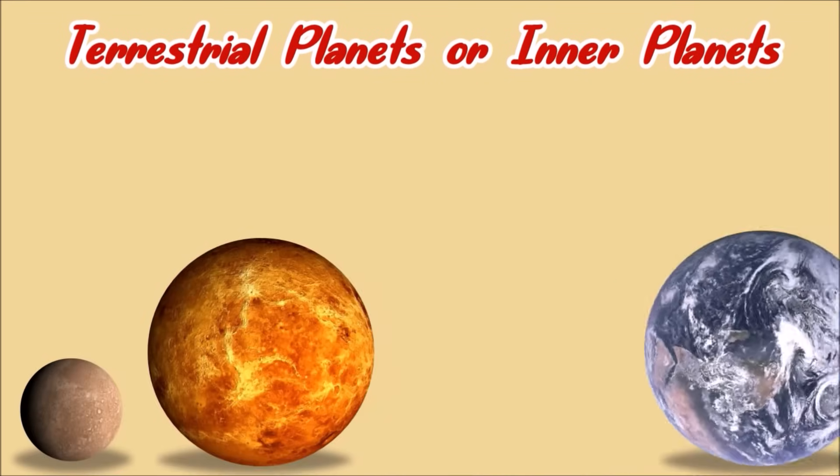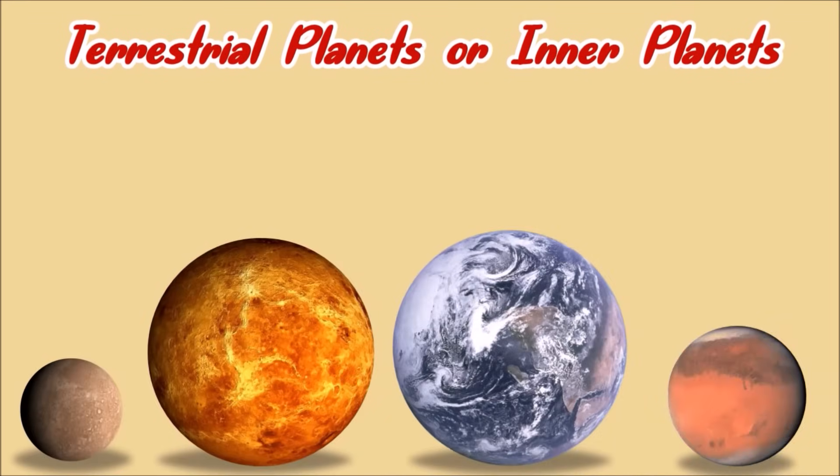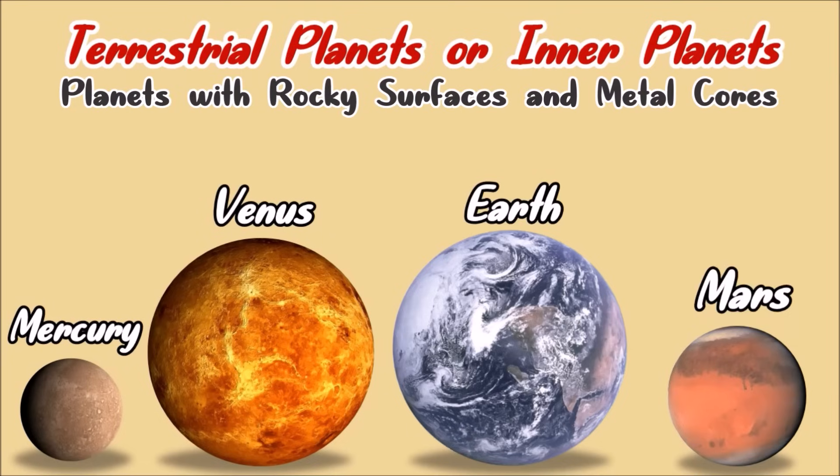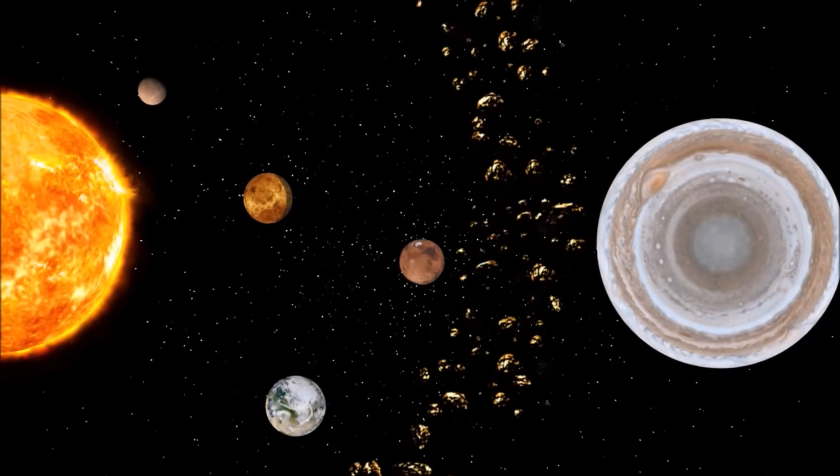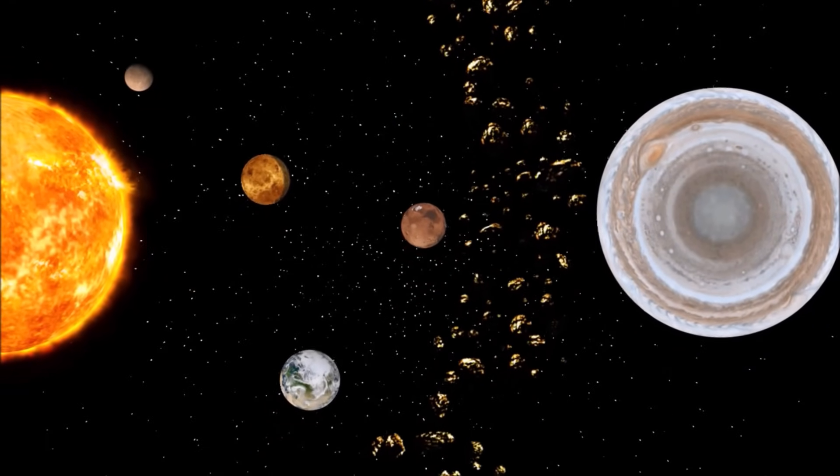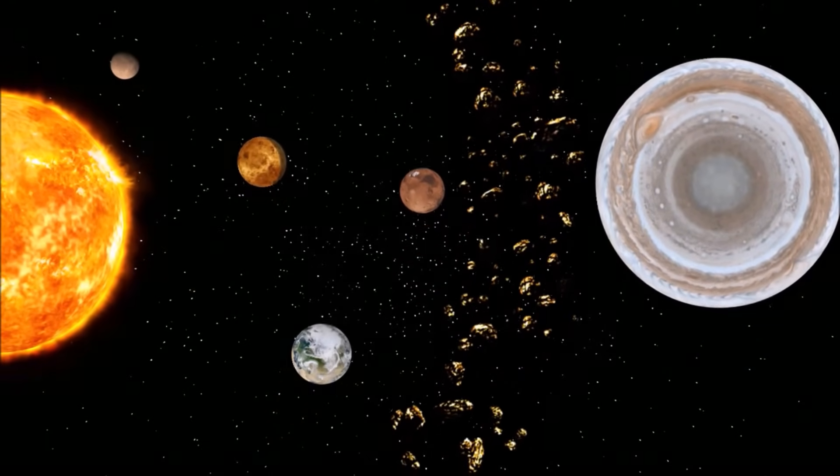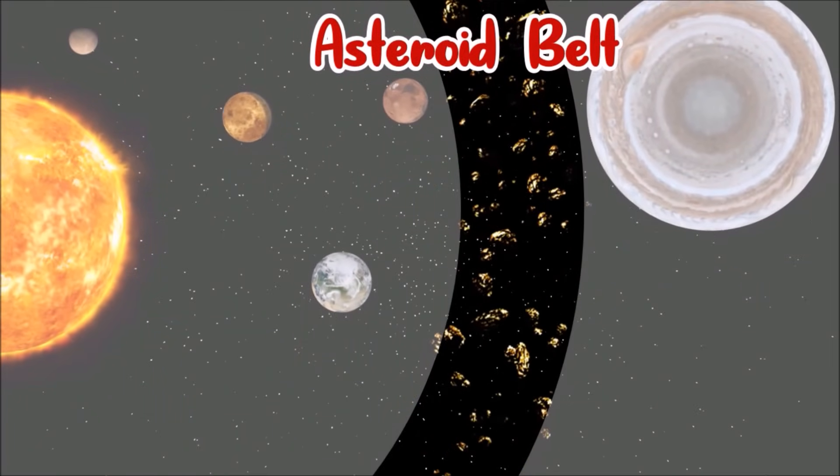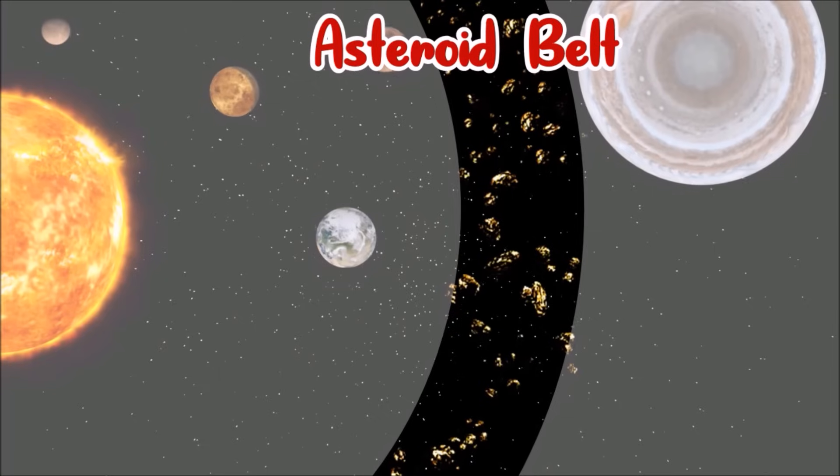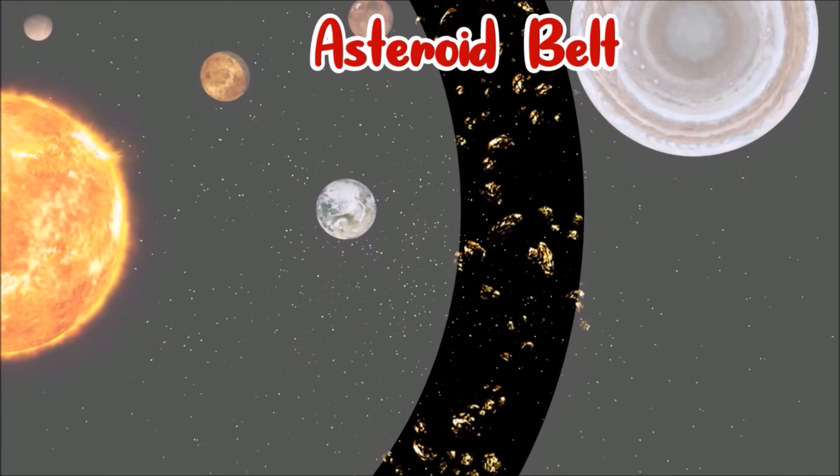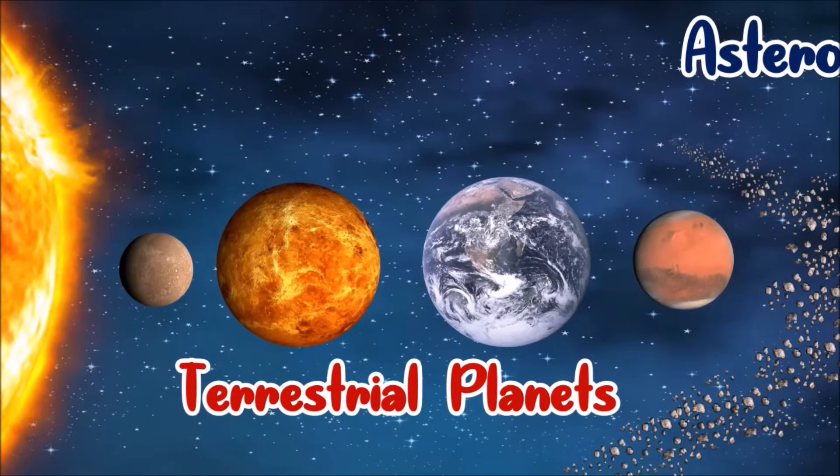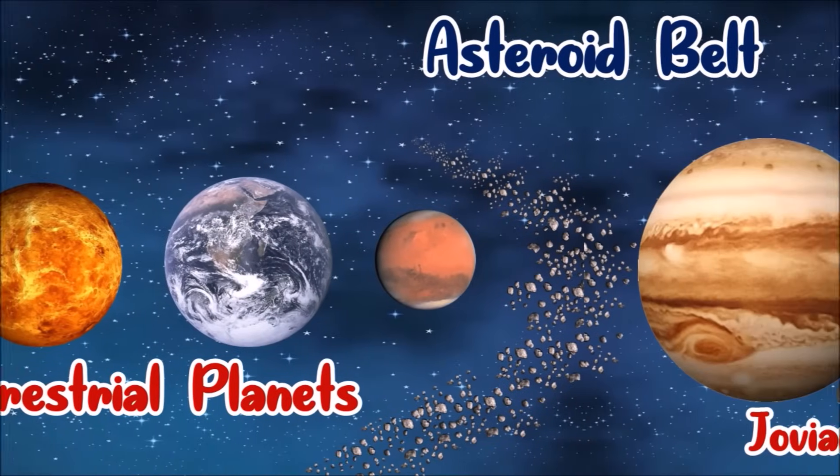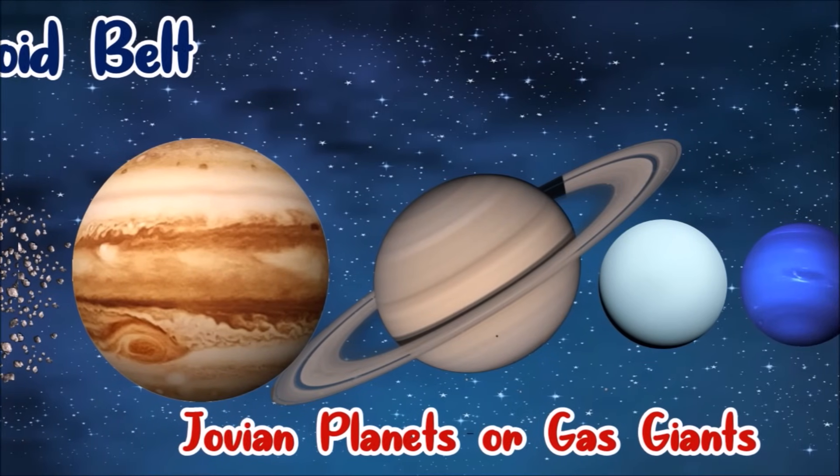Mercury, Venus, Earth, and Mars are called terrestrial planets because they have rocky surfaces and metal cores. Now, what are these things between Mars and Jupiter? These are groups of asteroids. This is called asteroid belt. An asteroid belt is found between the orbit of Mars and Jupiter. The asteroid belt separates the terrestrial planets and the Jovian, or gas giants.